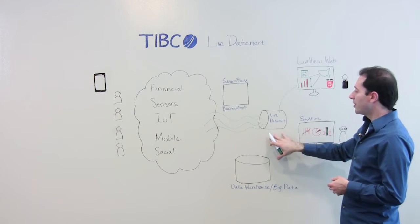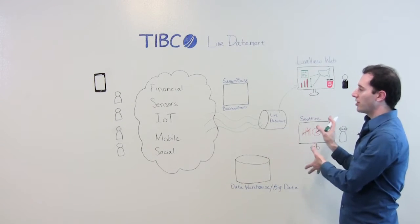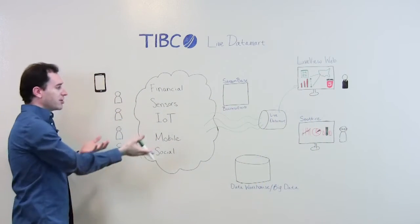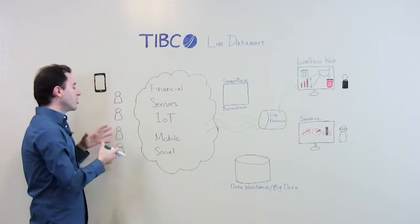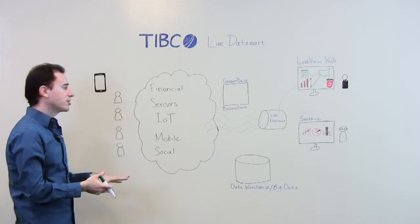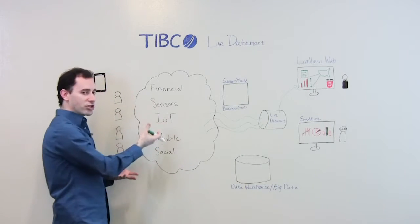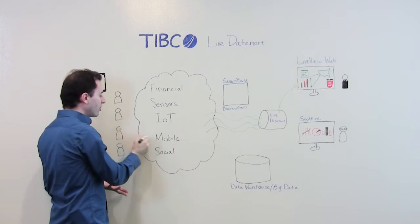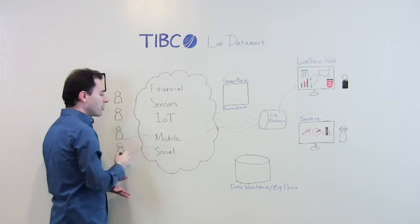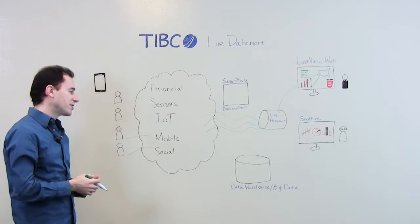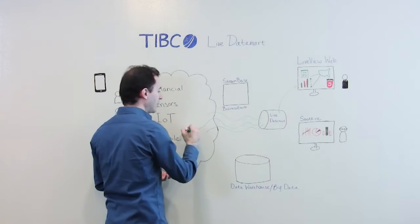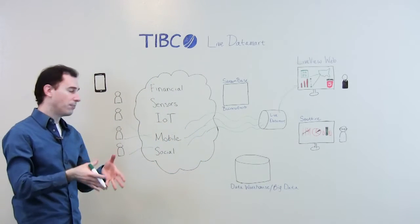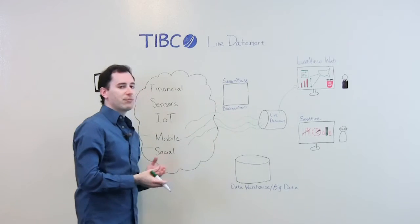Now, let's picture Live Datamart in the ecosystem of data and TIBCO products. First, let's go over the data sources. All these TIBCO products are capable of ingesting streams of data from a variety of sources — financial, Internet of Things, sensor machine data, or it can be direct customer data, as I'm showing here, interacting with mobile devices, through social media, or directly with your business. These streams of data are naturally real-time, time-stamped events that have value now. Those are captured by the Live Datamart.